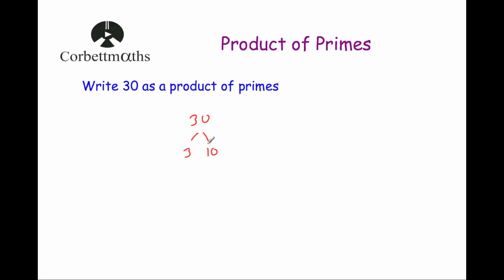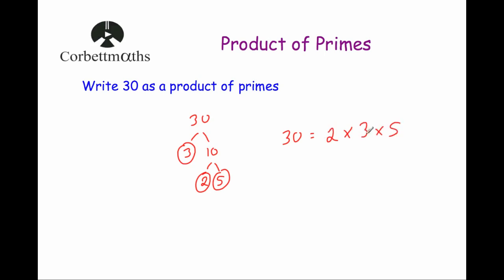Once you've written the two numbers down, circle any prime numbers. Three is prime so we circle it; ten isn't prime, so we draw two more branches and think of two numbers that multiply to make ten. I'll choose two and five — both prime, so circle them both. That means three times two times five equals 30. Writing it in order: 2 × 3 × 5. Let's check: two times three is six, times five is 30. So 30 as a product of primes is 2 × 3 × 5.